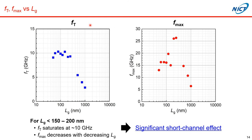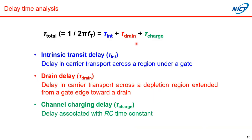These are gate length dependencies of FT and Fmax. As you see, FT monotonically increases with decreasing gate length down to 150 nm and saturates at about 10 GHz for further reduction of gate length. On the other hand, Fmax also increases with decreasing gate length and peaks at about 200 nm, then starts to decrease for further gate length reduction. These two features — saturation and reduction — are definitely due to significant short channel effects.